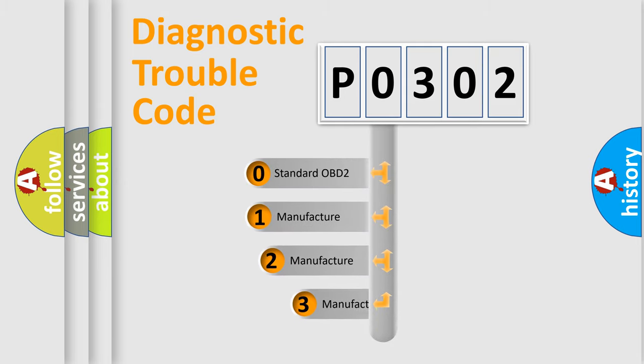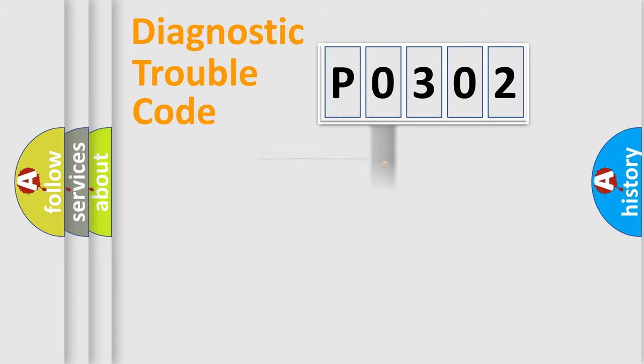This distribution is defined in the first character code. If the second character is expressed as zero, it is a standardized error. In the case of numbers 1, 2, 3, it is a manufacturer-specific expression of the car-specific error.